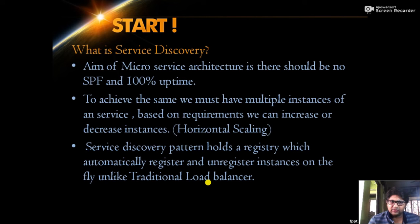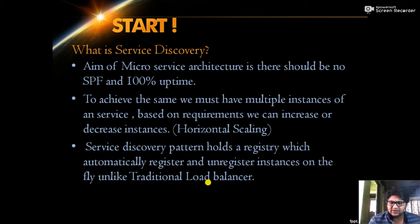To achieve these two principles, we need horizontal scaling. Horizontal scaling means a particular service can have multiple instances, and based on load, instances can be increased or decreased on the fly — without manual intervention or stopping the server. Service discovery patterns implement this by maintaining a dynamic registry. When an instance is added it is automatically added to the registry, and when deleted it is automatically removed, keeping the registry always up to date.